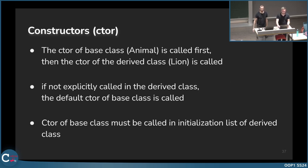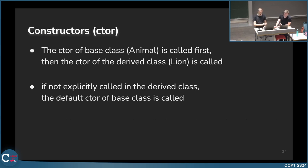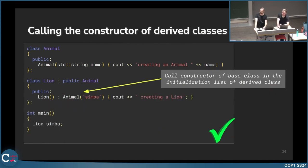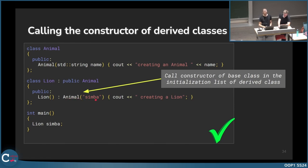A short recap of constructors: the constructor of the base class is called first, then the constructor of the derived class. If not explicitly called, the derived class calls the default constructor of the base class. When there is no default constructor anymore, you have to use the initialization list. The constructor of the base class must be called in the initialization list of the derived class.